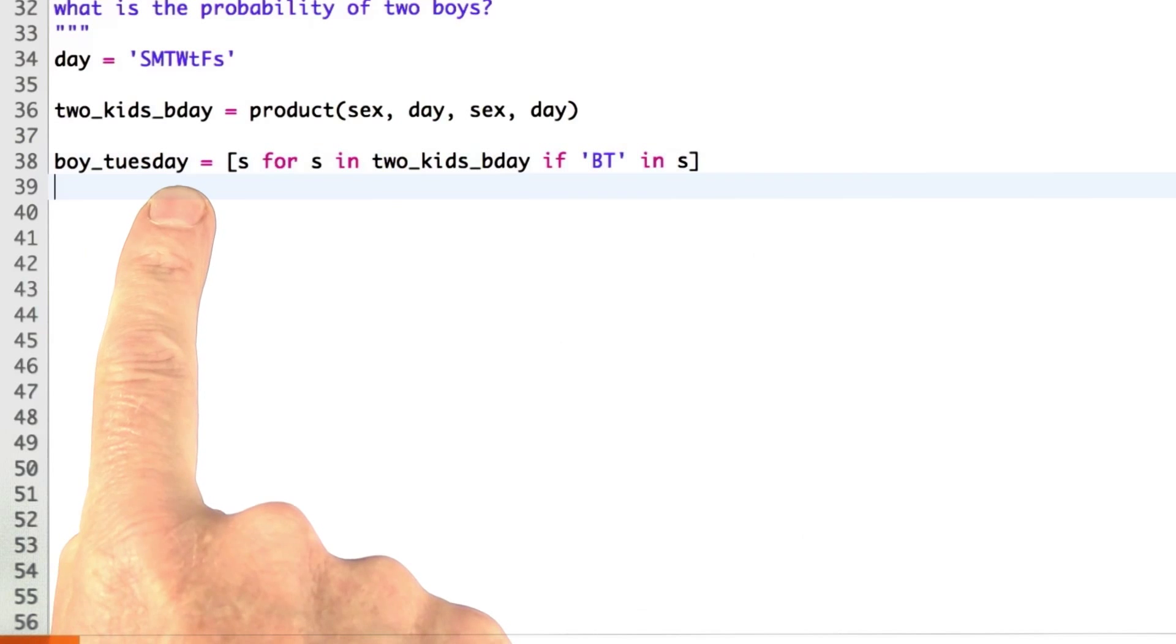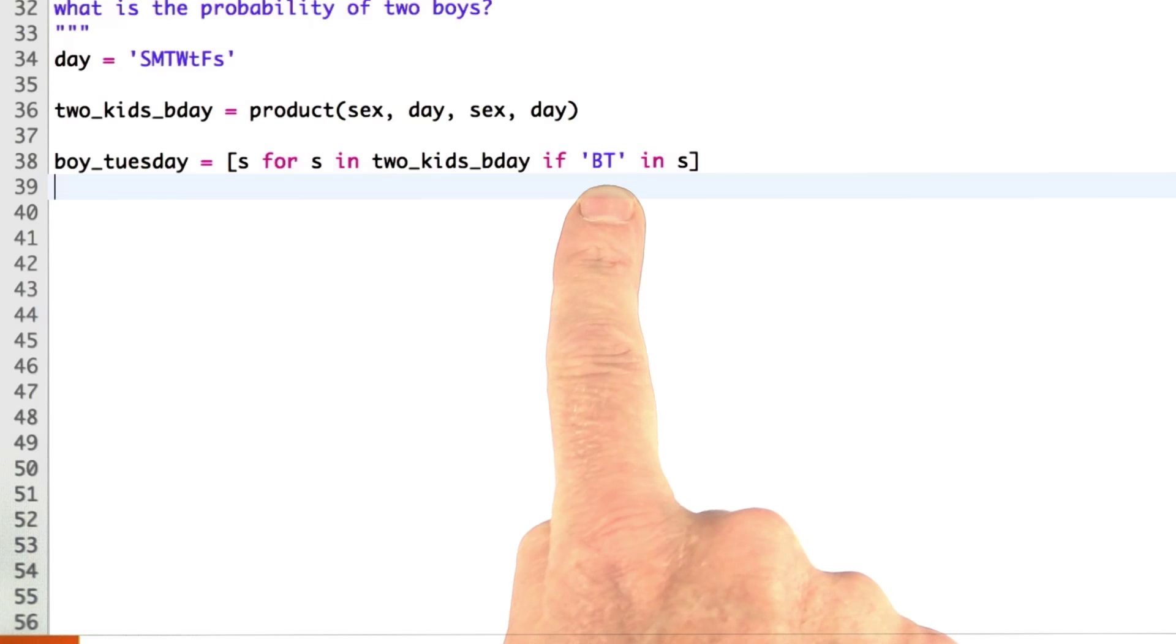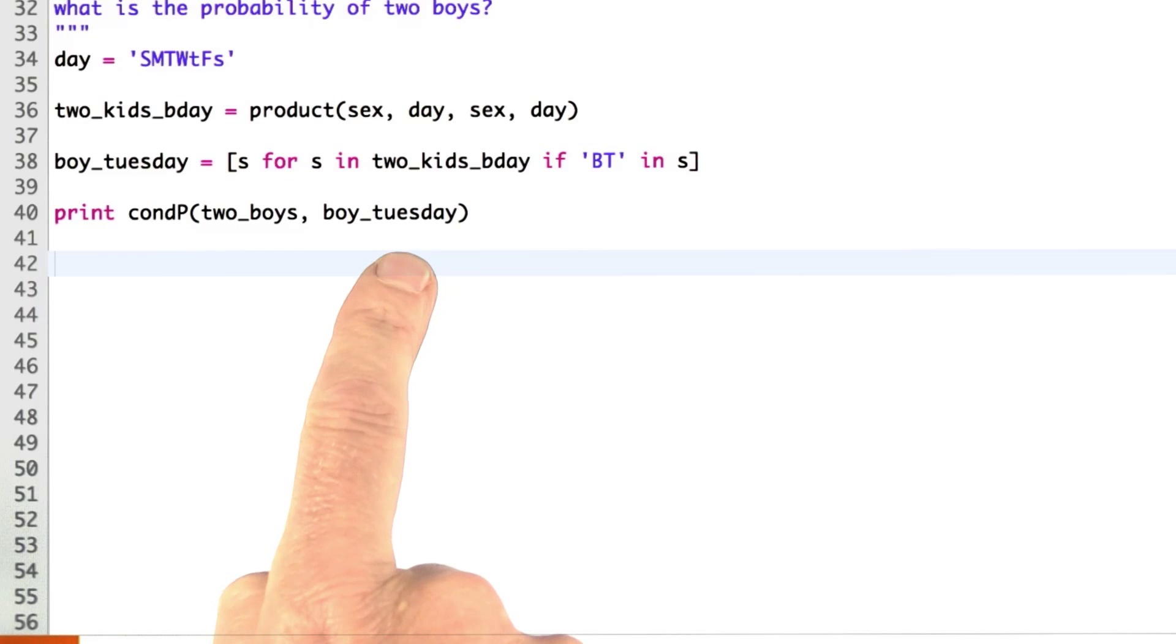Then a boy born on Tuesday is all the elements of this where bt appears in the string. So either bt will be the first two characters or the last two characters. Now we're finally at the point where we can say, given at least one boy born on Tuesday, what's the probability of two boys?